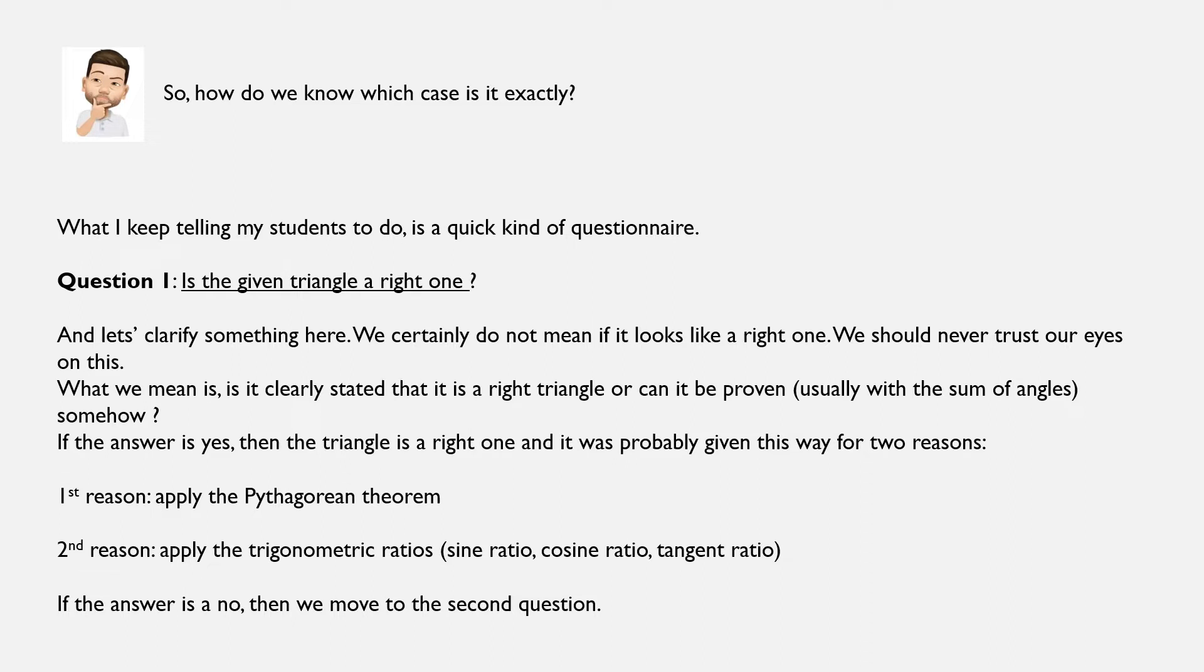By can it be proven, we mean could we use the given angles to find out that the given triangle is a right one? For example, we are given a triangle with an angle of 30 degrees and another angle of 60 degrees. So this one has to be a right one.